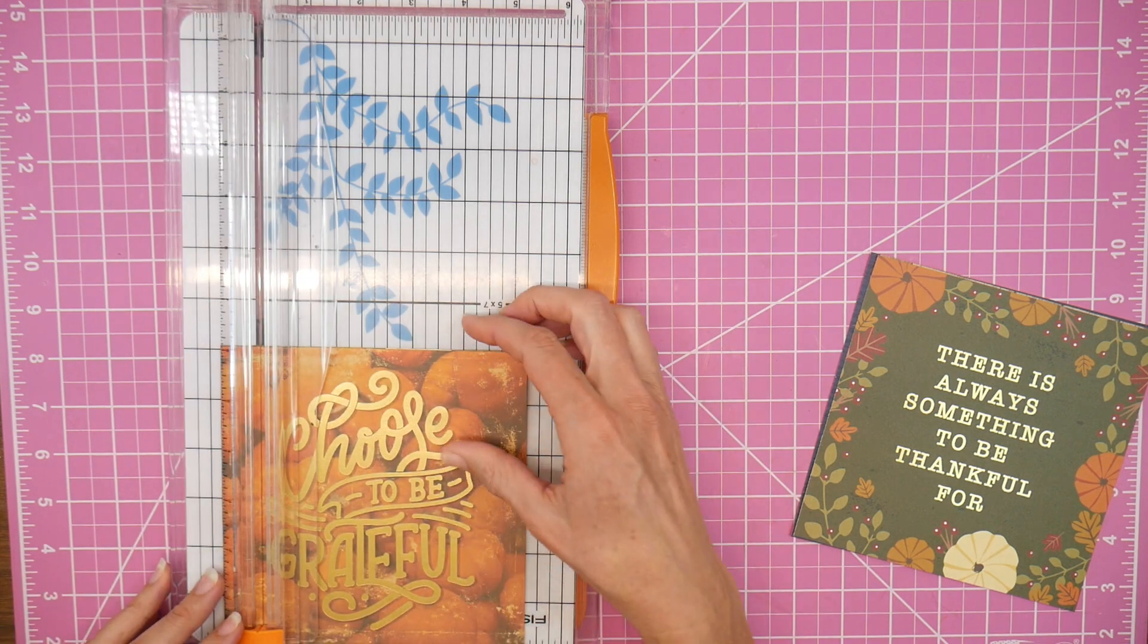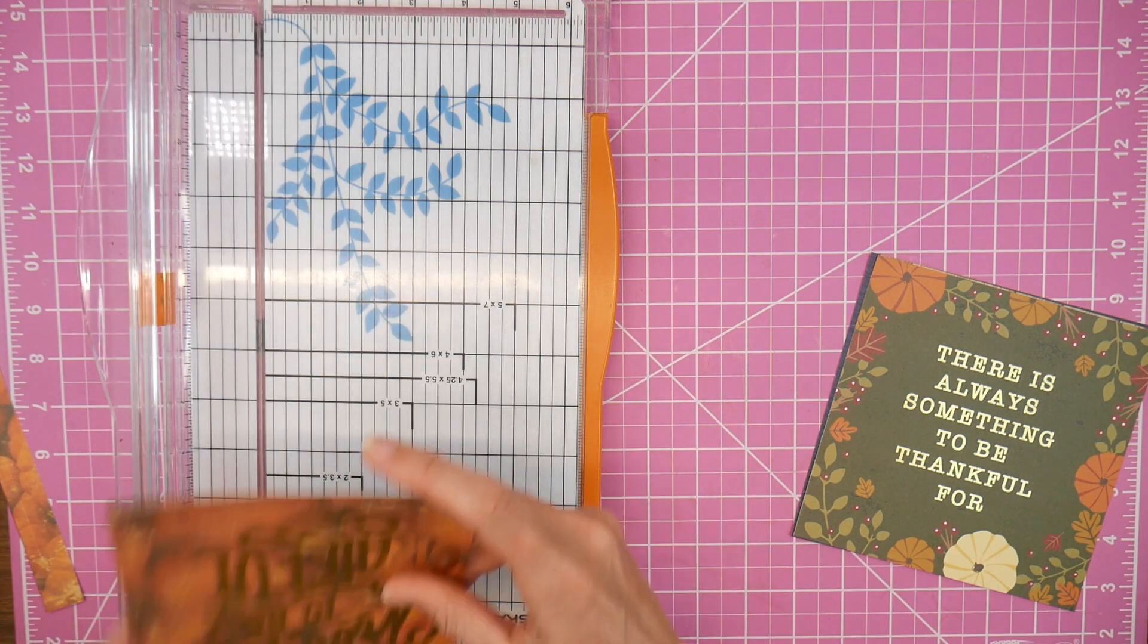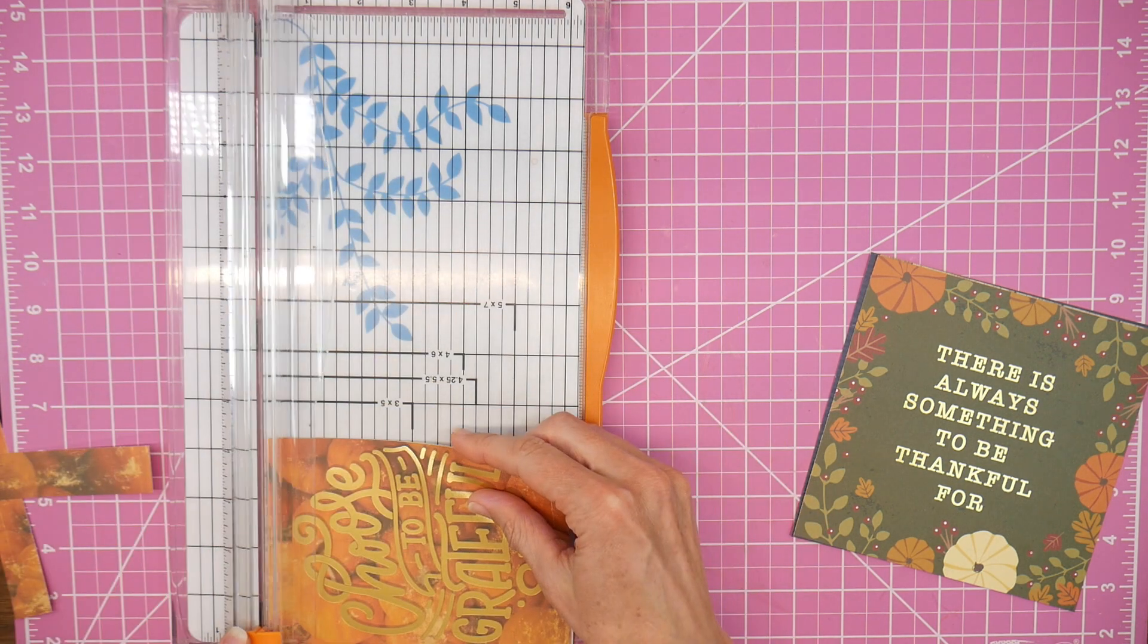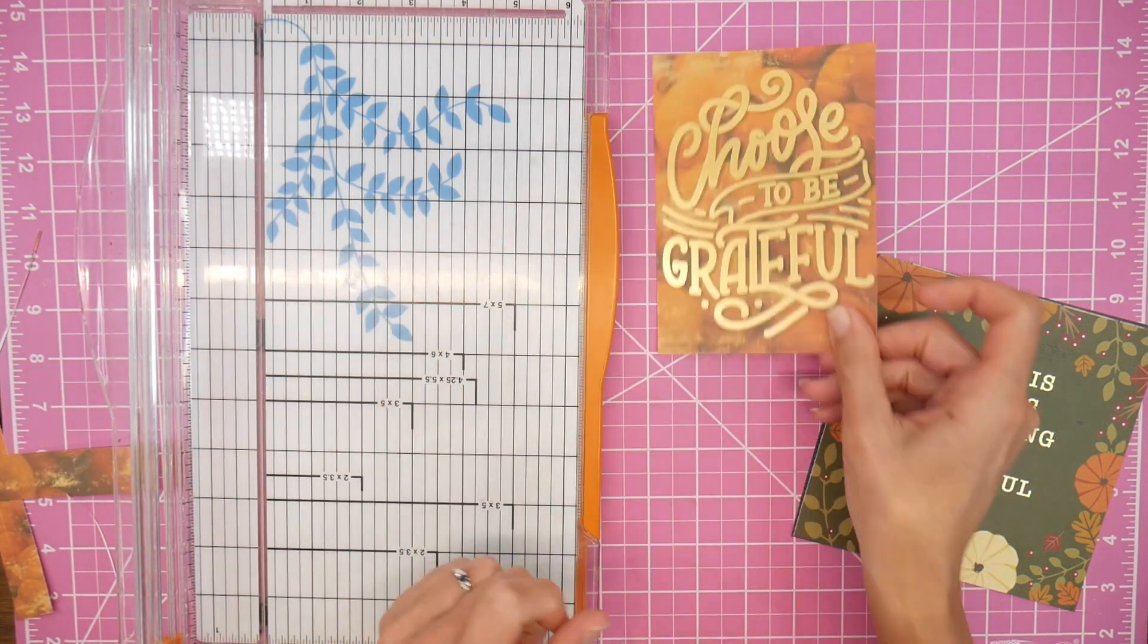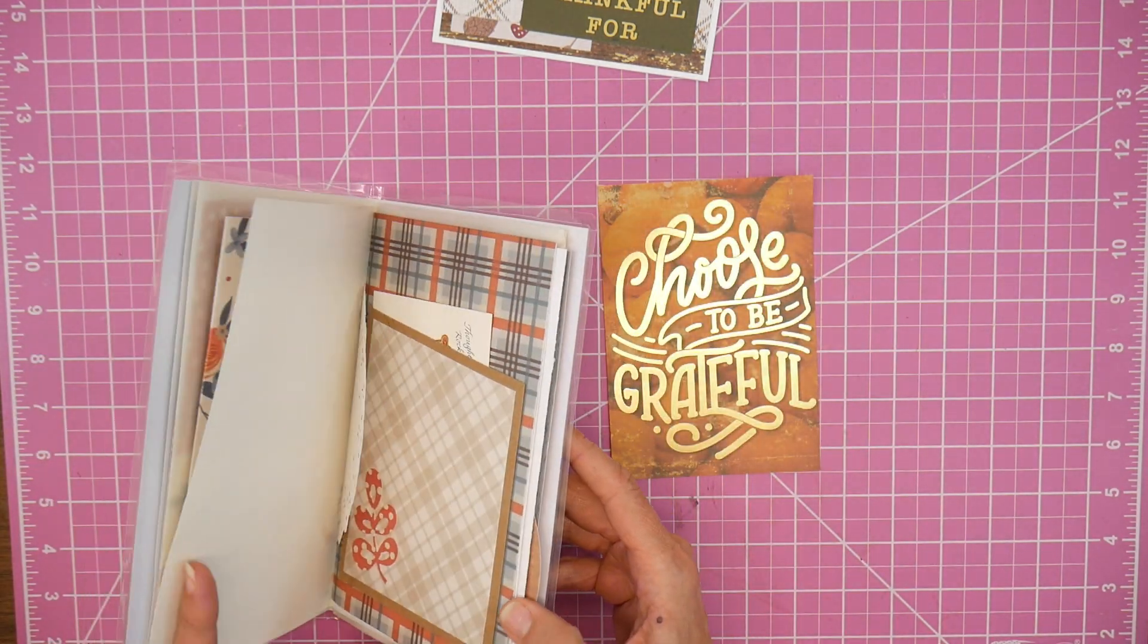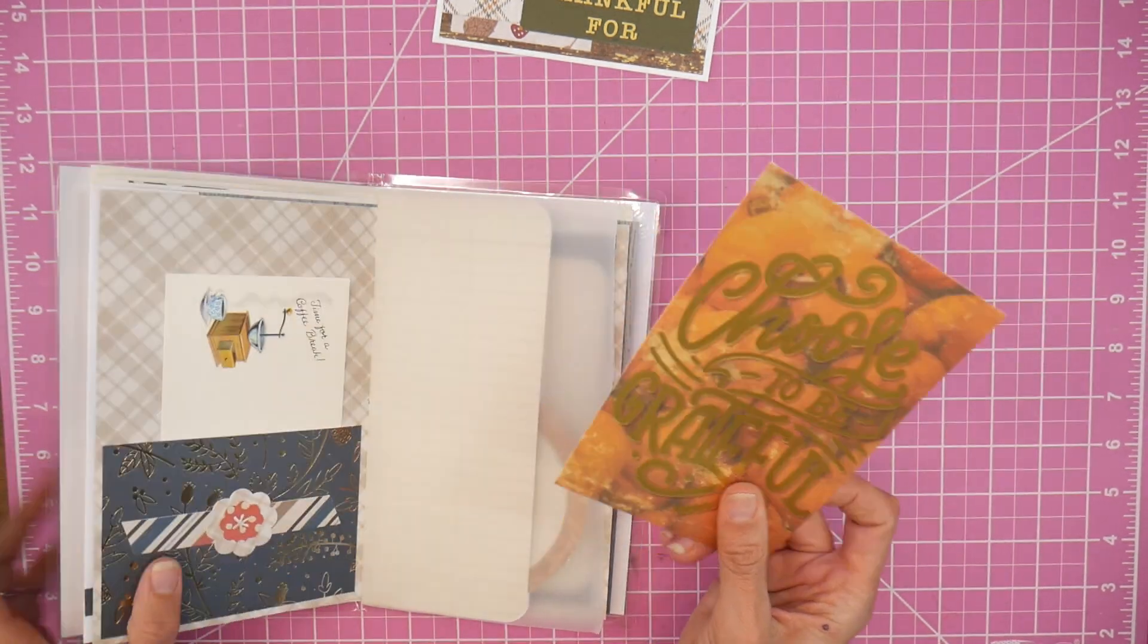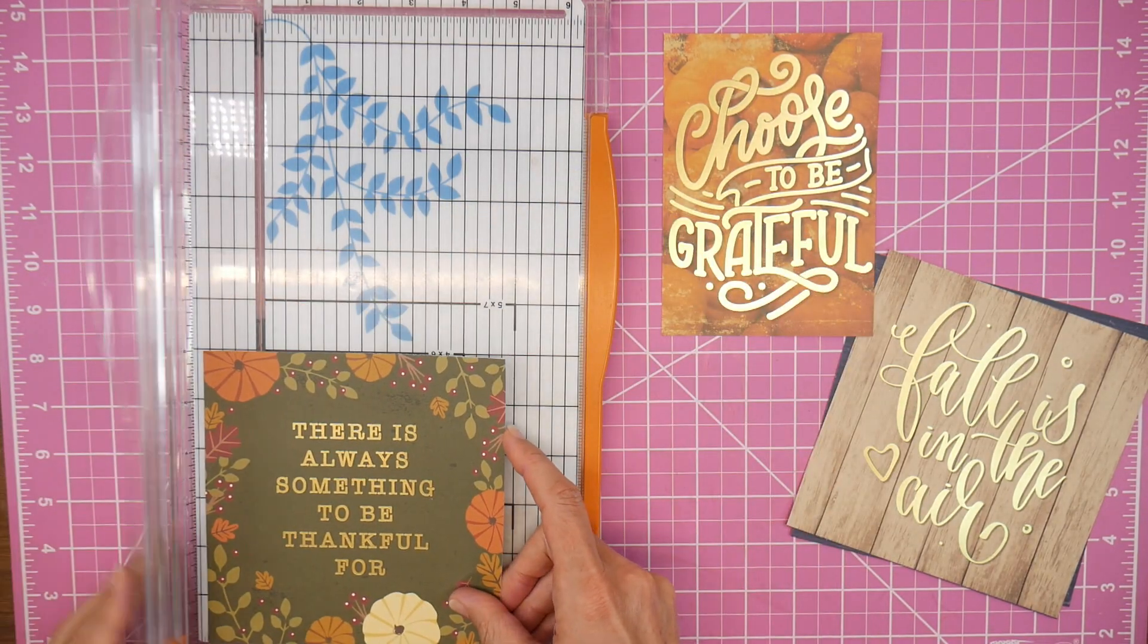So for project number one, we're going to start with that pumpkin background piece that says choose to be grateful. And I decided to trim this one down to about 4.25x6. So I would have liked to have gone down to 4x6, but it would have cut off part of the words. And just to keep it simple on this first one, I'm turning this into a journal card for a gratitude journal. So just something quick and easy you could do. You could also add it to a 5x7 card if you wished.